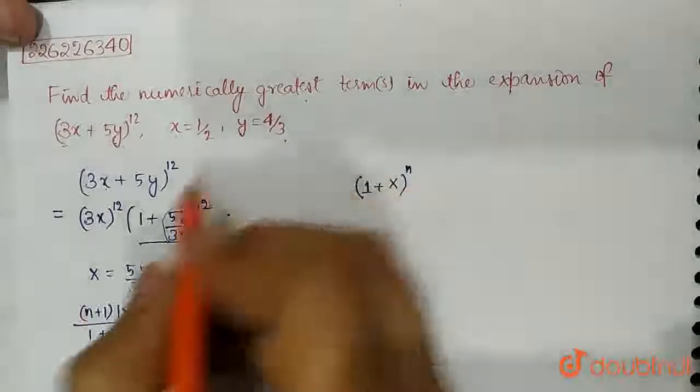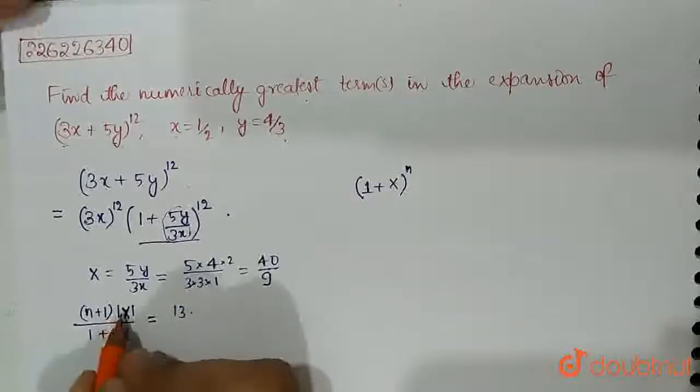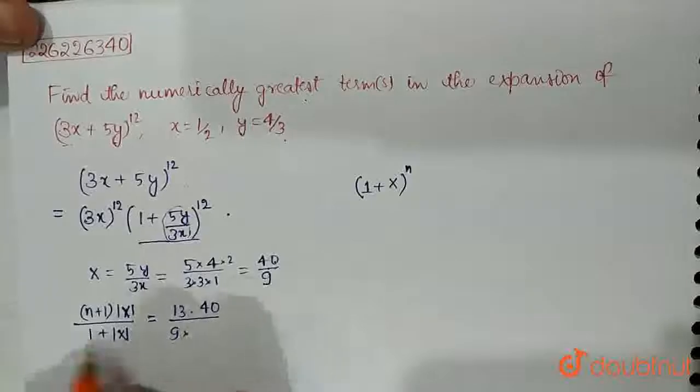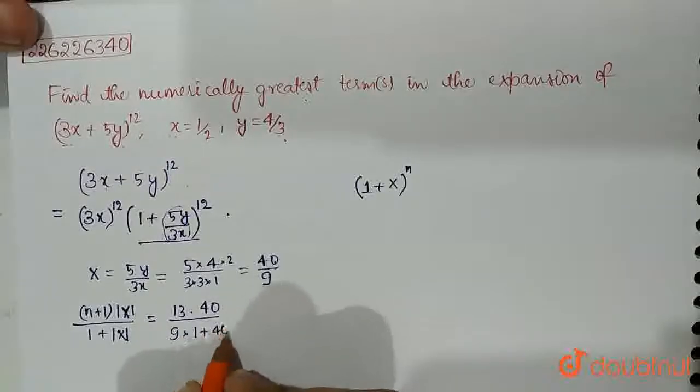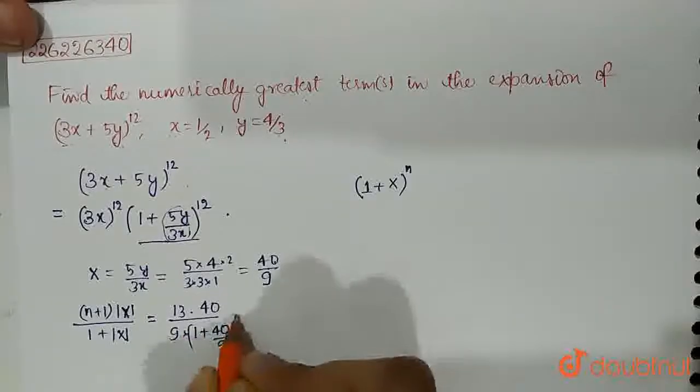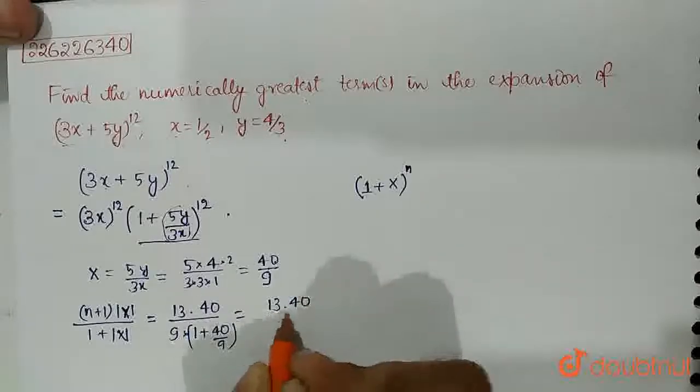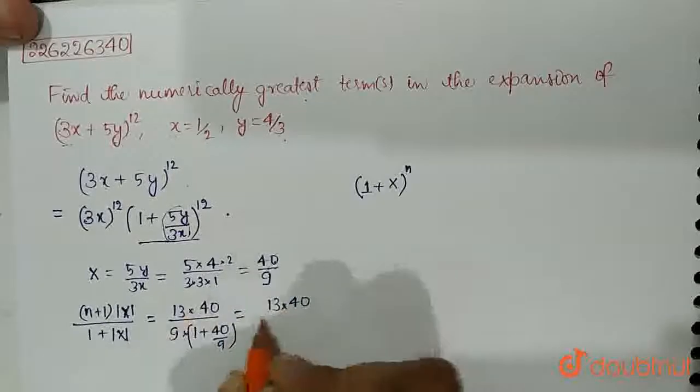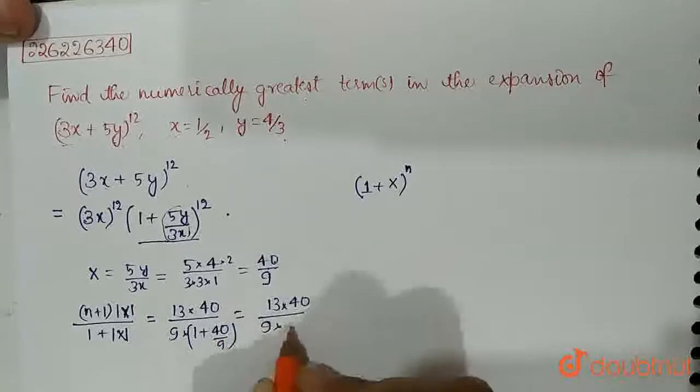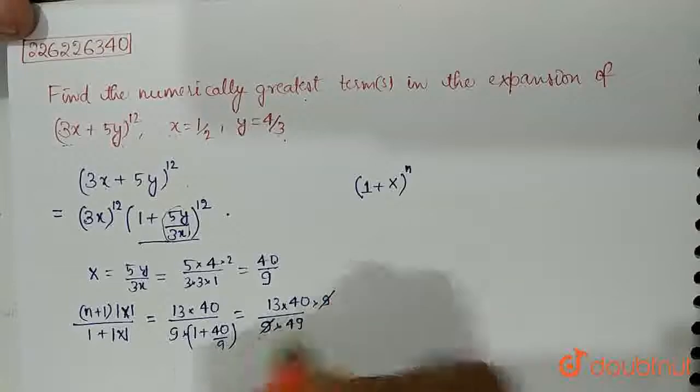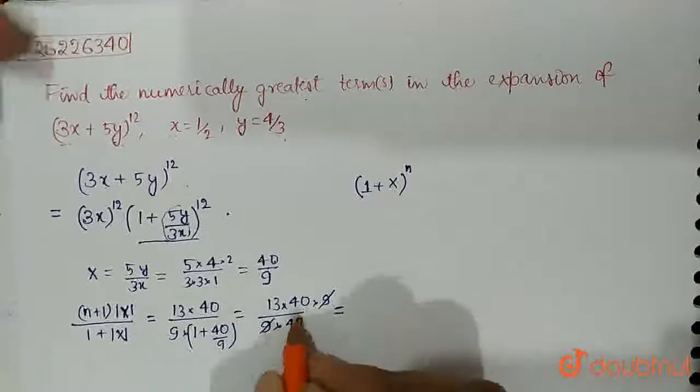So here n is 12 so it becomes 13 mod x is 40 upon 9 into this is 1 plus 40 upon 9 we take the LCM 13 into 40 on 9 into 49 times 9, 9 gets cancelled this becomes 520 upon 49.